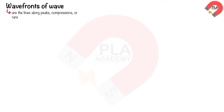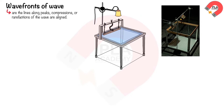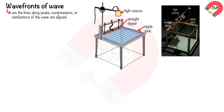Wavefronts of a wave are the lines along which peaks, compressions, or rarefactions of the wave are aligned. Demonstrating the wavefronts of the water wave in a ripple tank: a ripple tank is a shallow tray of water with a light source shining down through it. The light illuminates the wavefronts, making them visible.